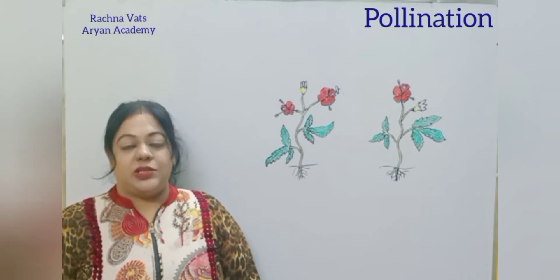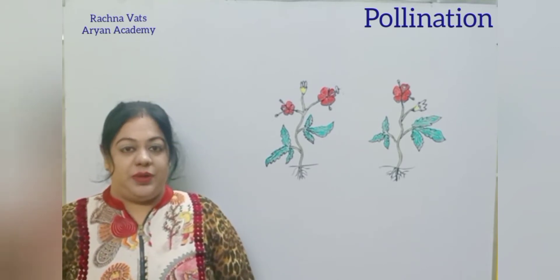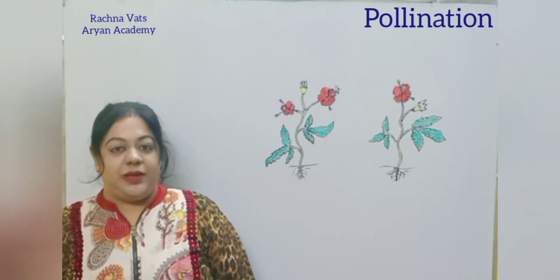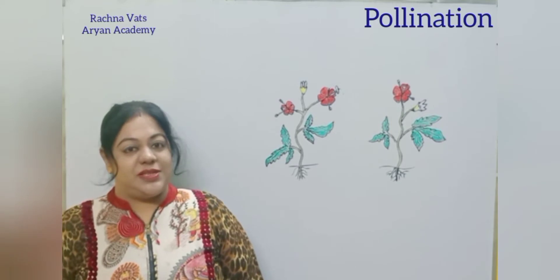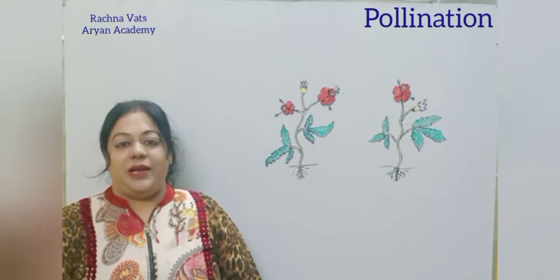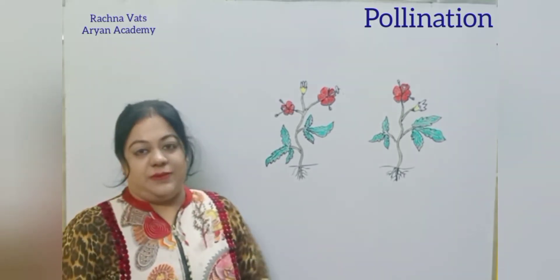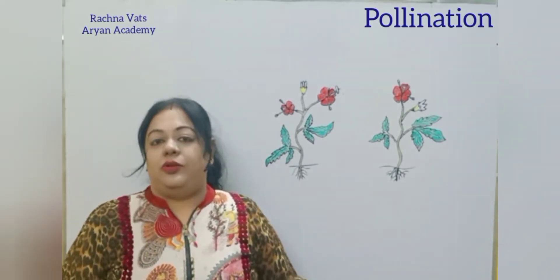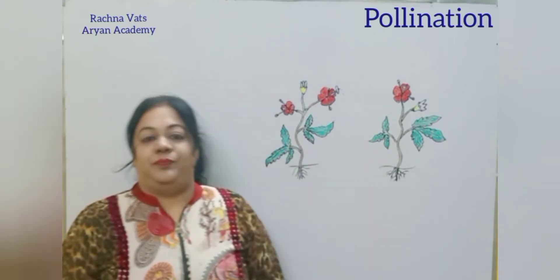This is the first part of the flower; we have discussed it in the previous lecture. We will see that in the description of the flower. Today our topic is pollination.